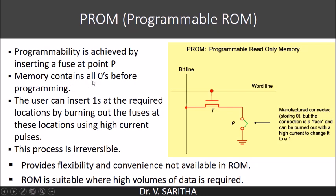Memory contains all zeros before programming. During manufacturing time, everything will be connected — all cells will be connected. Wherever we want to insert a one, that particular cell needs to be fused by passing a high current through it. This process is irreversible; once we fuse it, we will not be able to connect it again. So PROM provides flexibility and convenience not available in ROM. When compared to ROM, PROM provides better flexibility, while ROM is suitable when high volumes of data are required.